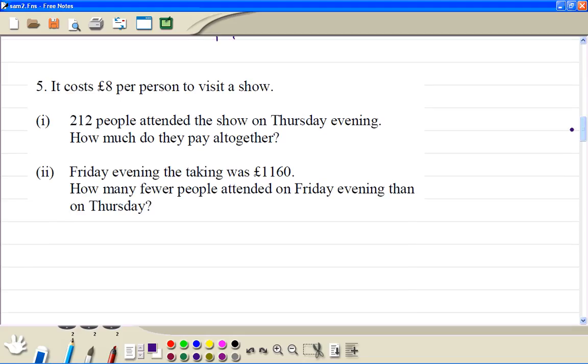Number 5. So 212 times 8. 8 times 2 gives 16, you carry 1. 8 times 1 is 8 plus 1 is 9. 8 times 2 is 16. So the full taking is £1,696.